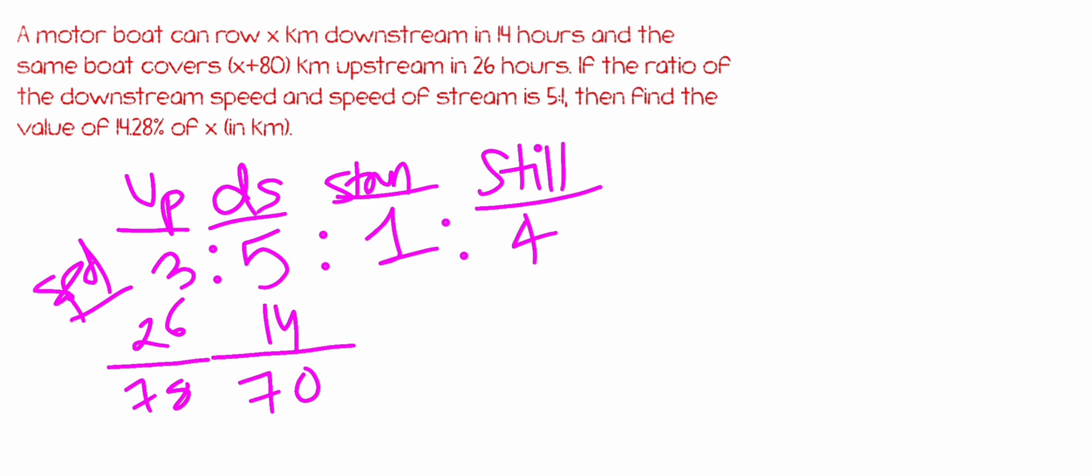So the 8 part gap equals 80 kilometers. One part will be 10 kilometers. So here x with downstream speed, its actual value is 70 times 10 equals 700.